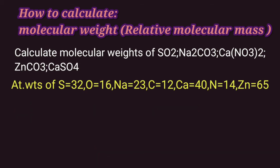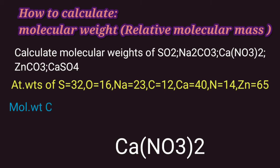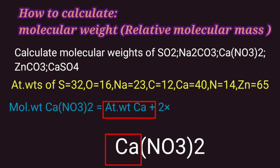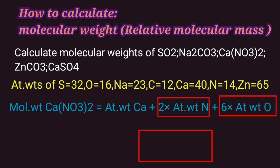Our next compound is calcium nitrate, which has 1 calcium atom and the NO₃ radical in brackets with subscript 2. So all the atoms inside the bracket have to be multiplied by 2. Molecular weight of calcium nitrate equals atomic weight of 1 calcium atom, 2 nitrogen atoms, and 6 oxygen atoms.